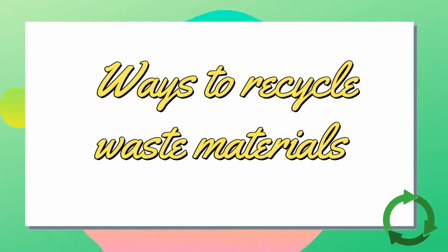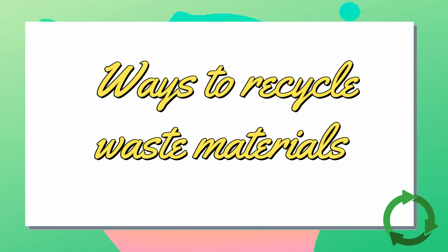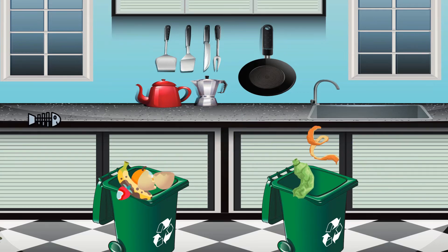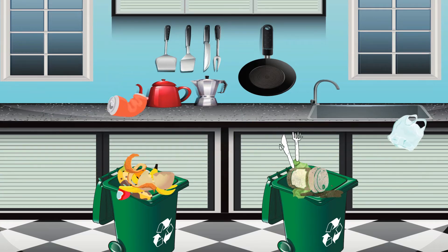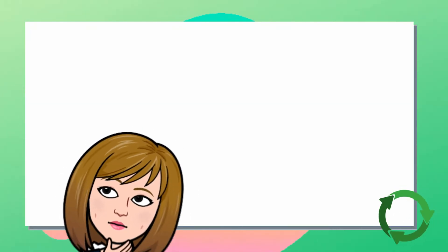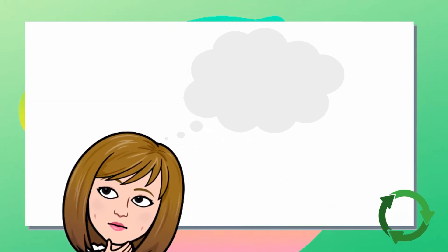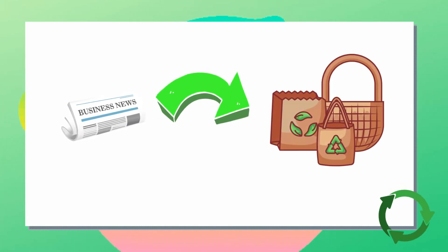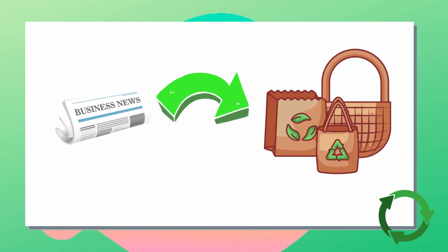What are the ways to recycle waste materials? It should start at home by segregating or separating waste materials into biodegradable and non-biodegradable. Then, think of the possible materials that can be made out of waste. For example, old newspaper can be turned into a decorative object such as baskets or bags.